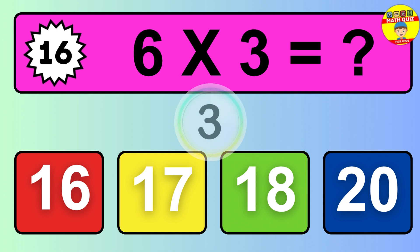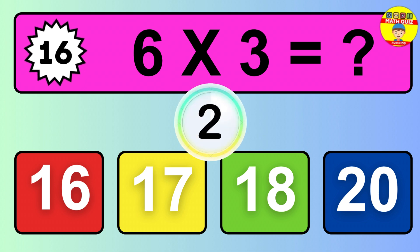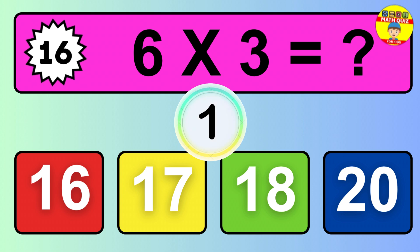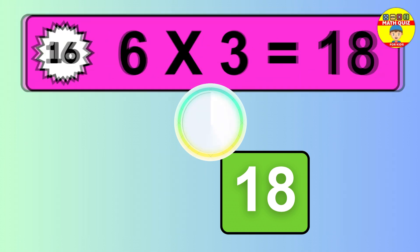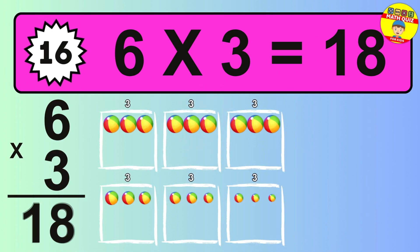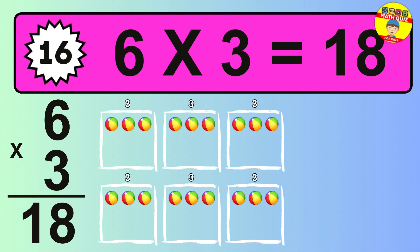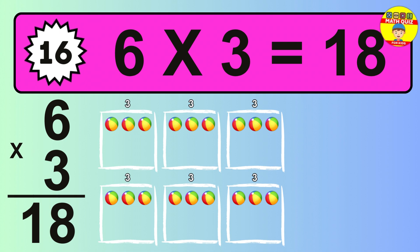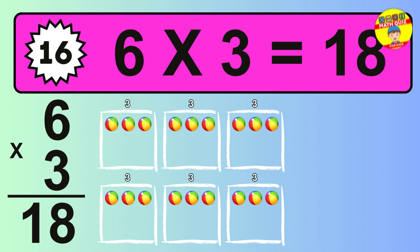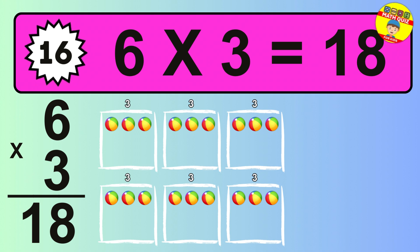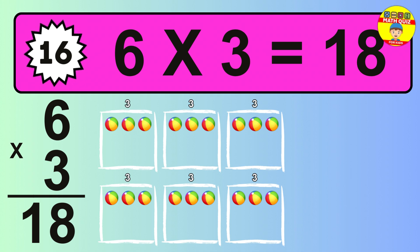Question 16. Six times three equals what? The answer is six times three is eighteen. To calculate, we have six groups with three balls each one. So how many balls do we have? Eighteen balls.